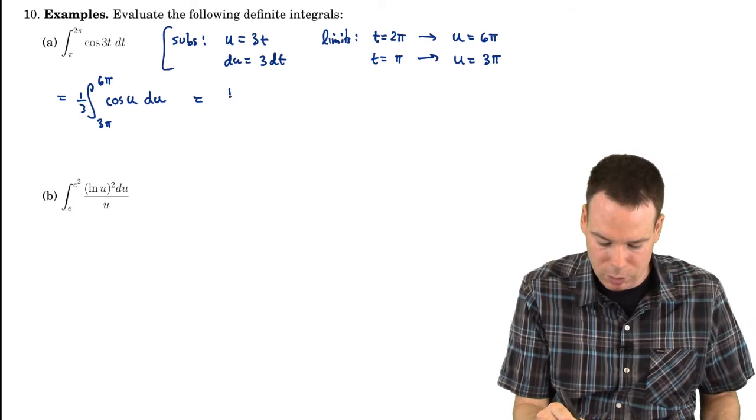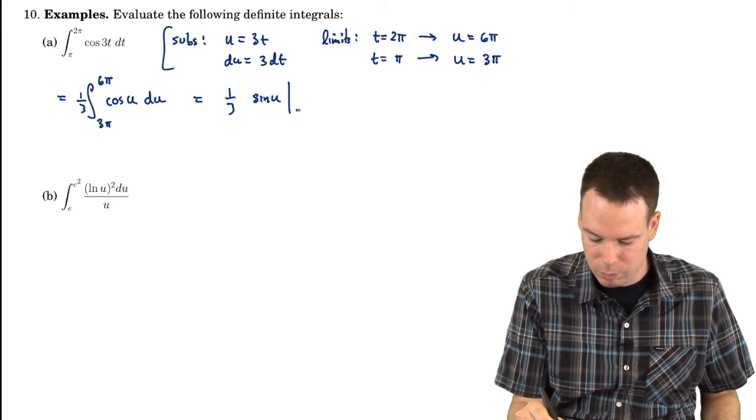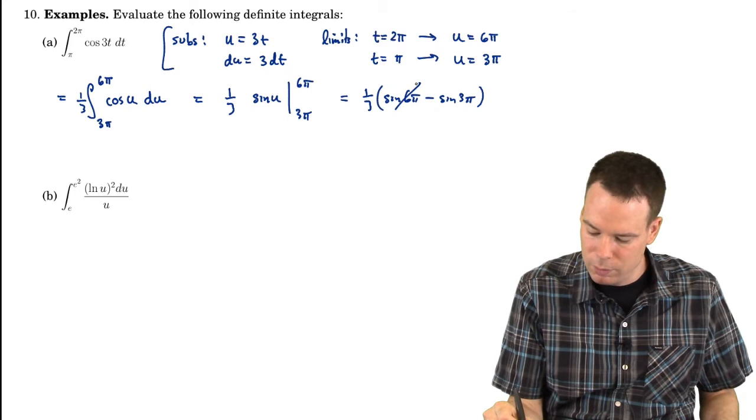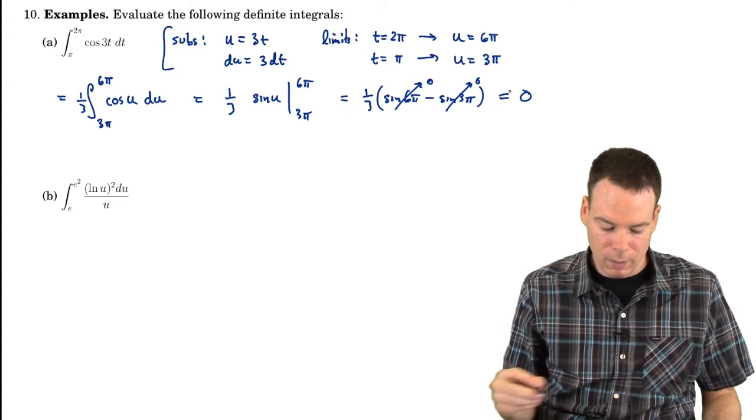And now we can go ahead and compute the antiderivative. So the antiderivative of cosine of u is sine u. And then we're going from 3pi to 6pi. So this becomes then 1 third of sine of 6pi minus sine of 3pi. And both of these are 0. So we get a value of 0 for our integral.